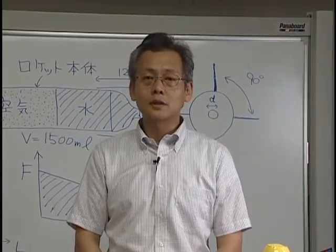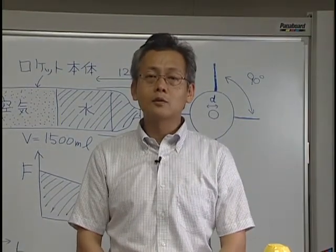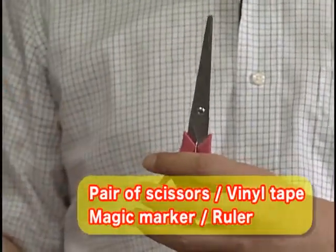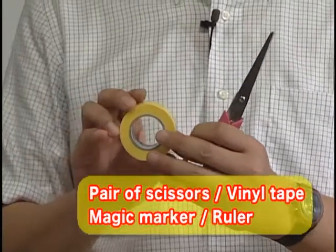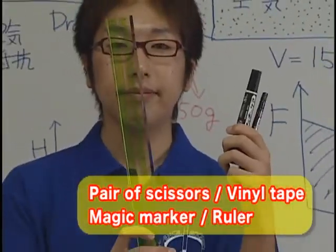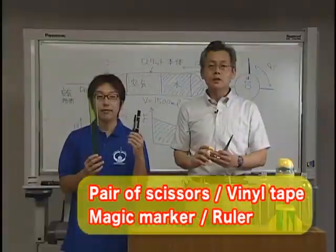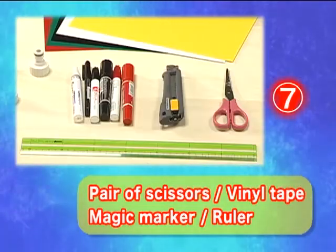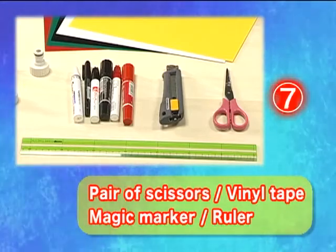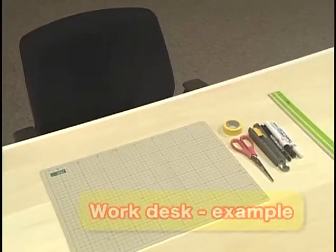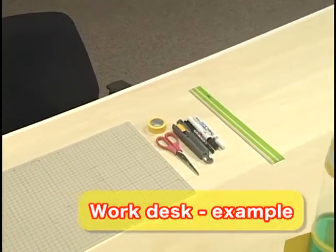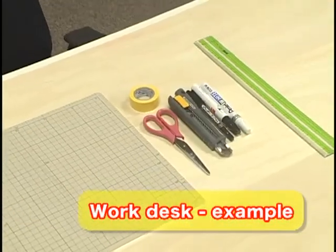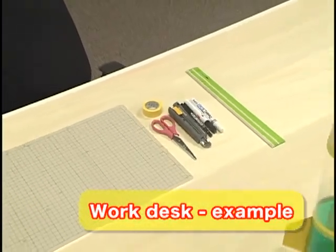All of the materials needed to build a rocket have been assembled. You'll also need a pair of scissors, some vinyl tape, a magic marker, ruler and a cutter. The use of plywood or a cutting mat is recommended, as they will protect your workspace and desk from damage by the scissors and cutter.